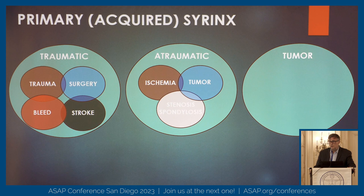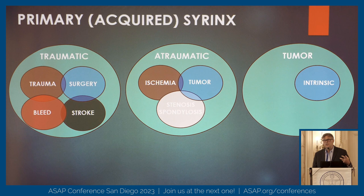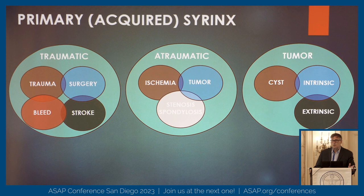Tumors — is it a tumor involving the tissue of the spinal cord, or is it extrinsic where it's pushing on the cord and creating compromise? Is the tumor associated with a cyst? That's important because it may appear to be a syrinx cyst, but usually it's a tumor cyst — fluid specifically related to the tumor. A lot of tumors can also hemorrhage into the cord.